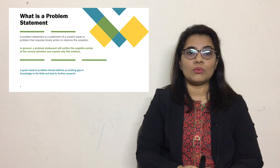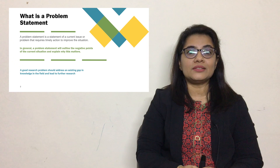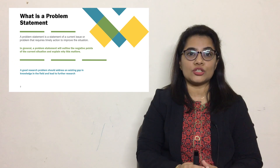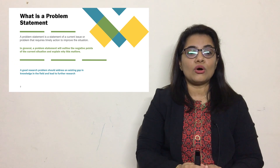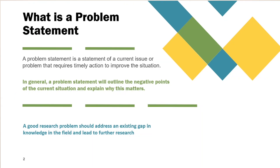First of all, what is a problem statement? A problem statement is a statement of a current issue or problem that requires timely action to improve the situation. So interpreting this definition, a problem statement is related to the current issue, problem, or researched phenomena you are going to explore through your research.